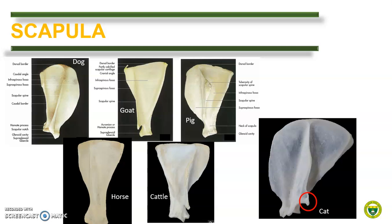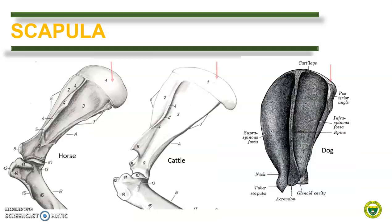In cats, the scapula is also triangular with the scapular spine dividing the fossae equally like in dogs. There is an acromion and in addition there is the suprahamate process, a caudal projection of the acromion, which is present only in cats. The scapular cartilage is a cartilaginous structure at the dorsal border of the scapula. In horse, ruminants, and pig, the scapular cartilage is a broad structure, whereas in dogs the scapular cartilage is narrow.